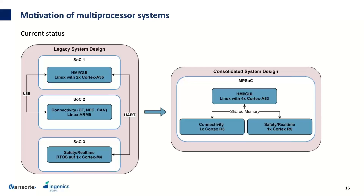In recent years, more and more MPSoCs have been created — for example from NXP the IMX8 or IMX7 — where multiple processors are integrated in one SoC. You can have a Cortex-A53 with Linux on four cores, a Cortex-R5 for connectivity, and another Cortex-R5 for safety and real-time applications. These processors communicate via shared memory without external interfaces like USB or UART. This consolidated design is more energy efficient, has a shorter software bill of materials, and is easier to evaluate as a complete system.